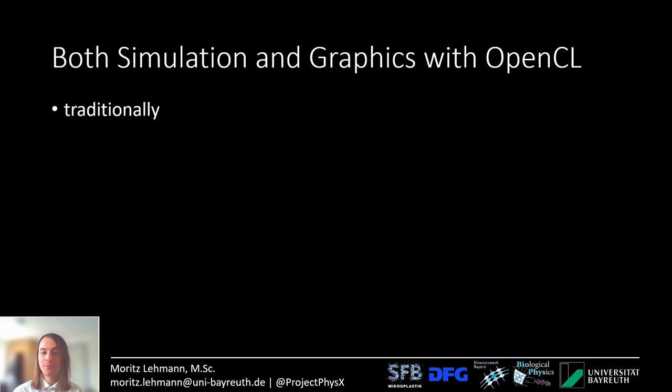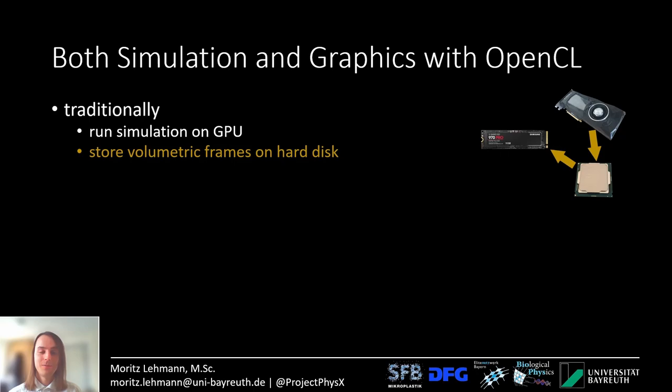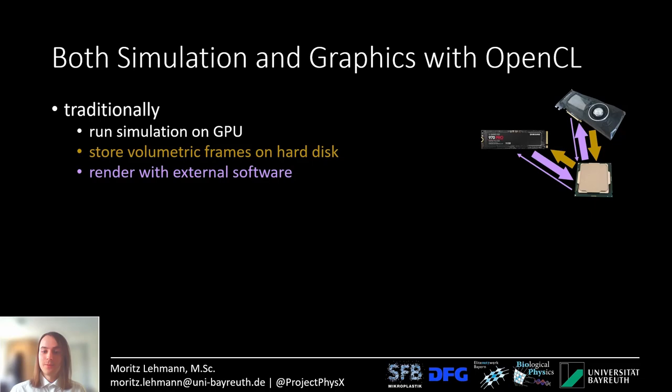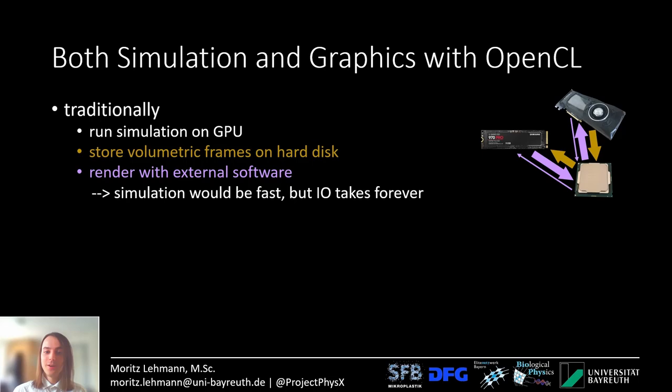Now I guess you all want to know how I pull this off. The basic idea is to do both simulation and graphics with OpenCL. In a traditional approach you would do the simulation on the GPU, which is very fast, and then store volumetric frames on the hard disk — for example the velocity field or the density field — and then render these volumetric frames with external software afterwards.